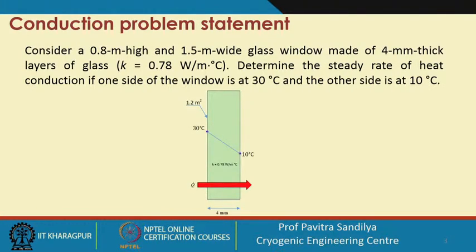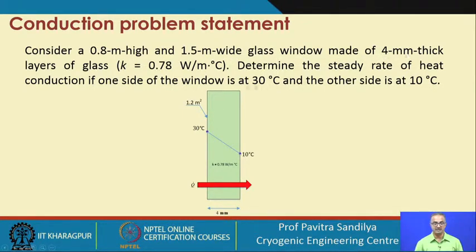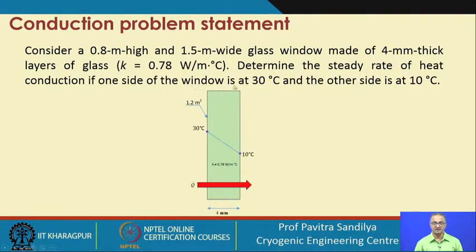The problem statement is: we consider a 0.8 meter high and 1.5 meter wide glass window made of a 4 millimeter thick layer of glass. The conductivity of glass is given as 0.78 watt per meter per degree centigrade. We have to determine the steady rate of heat conduction if one side of the window is at 30 degrees centigrade and the other side is at 10 degrees centigrade.